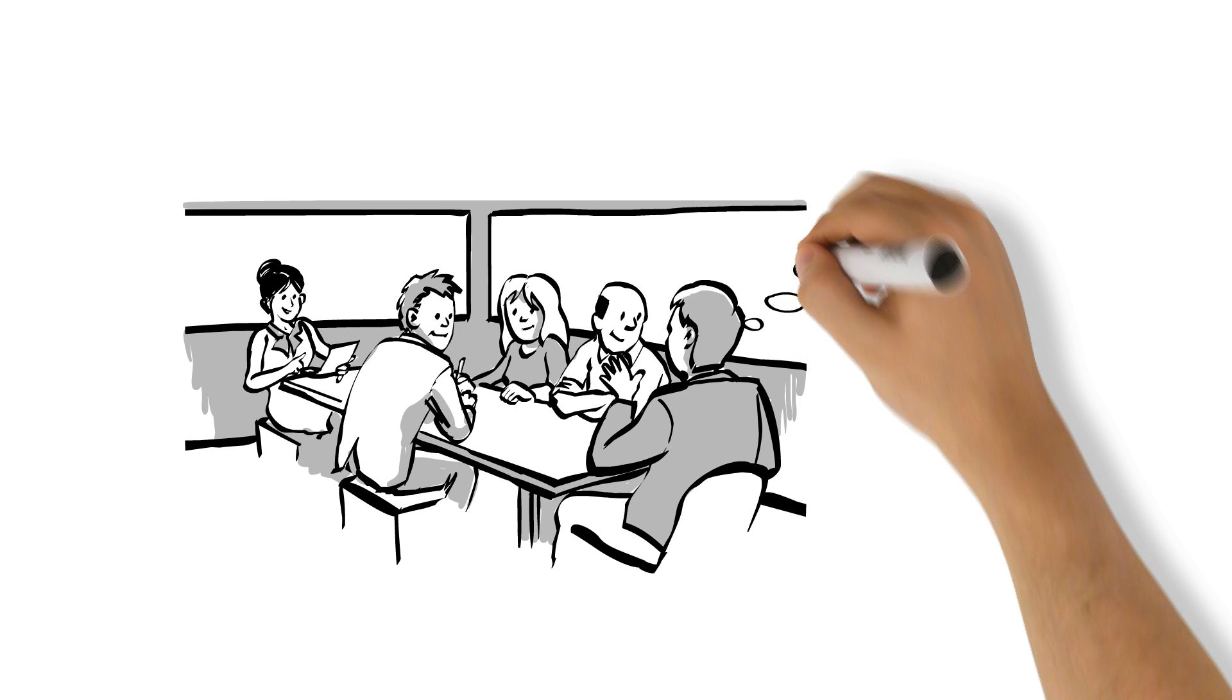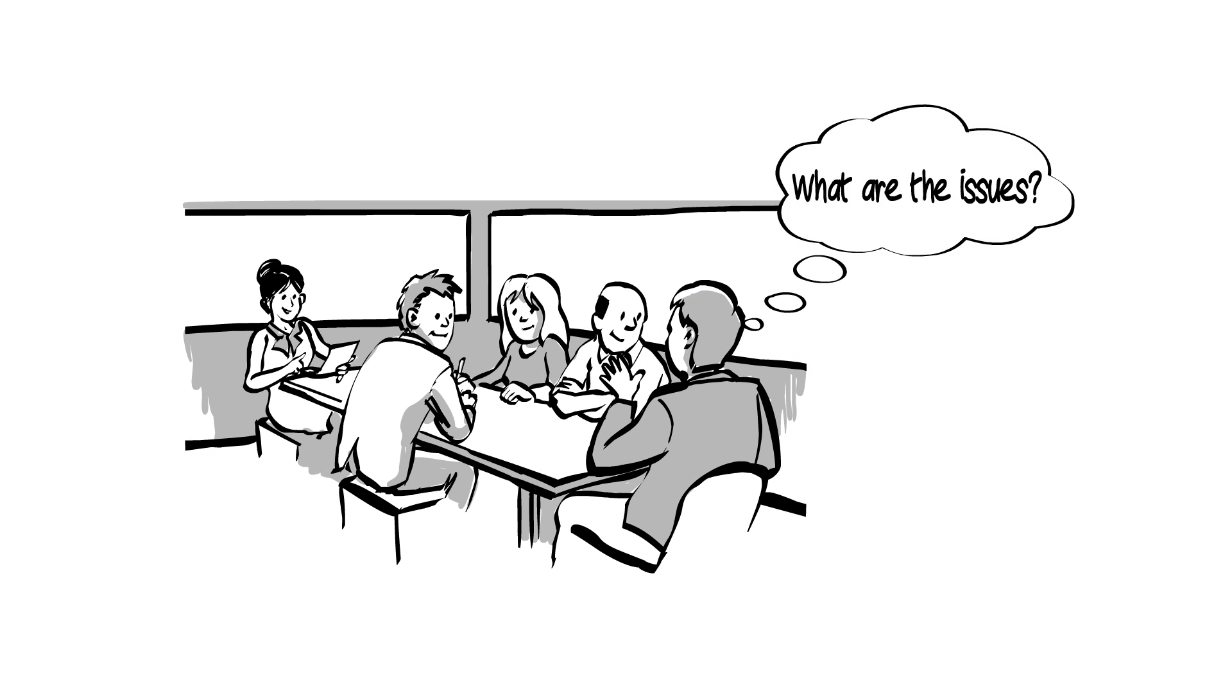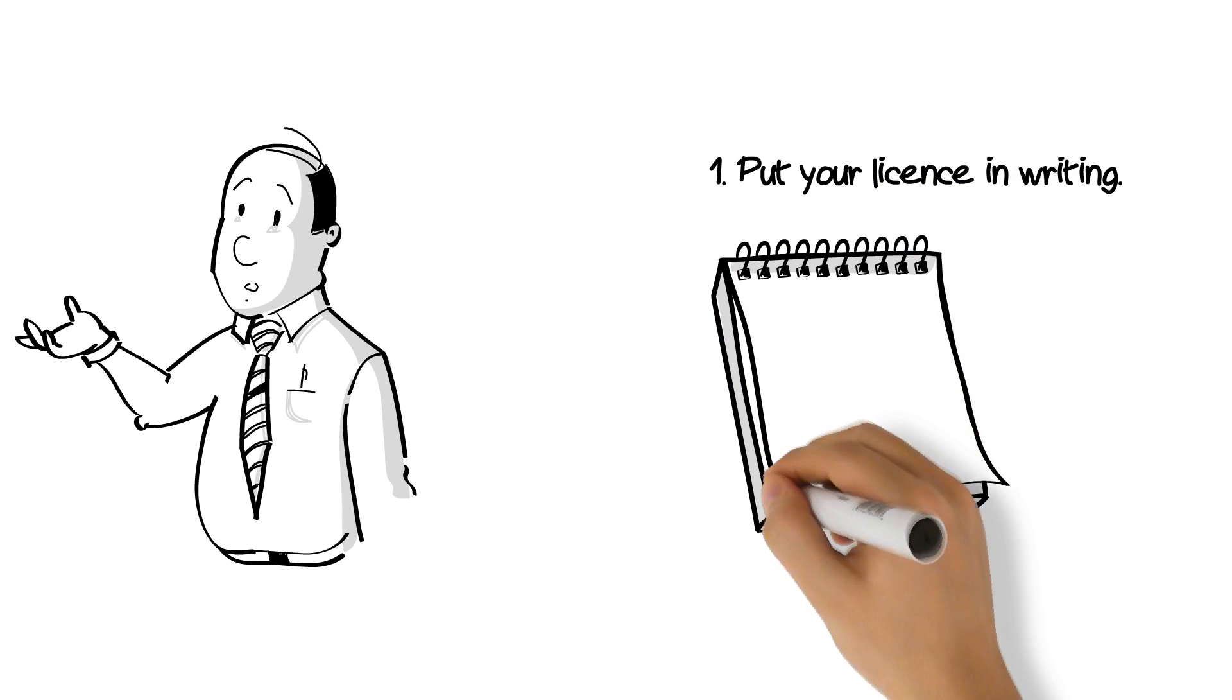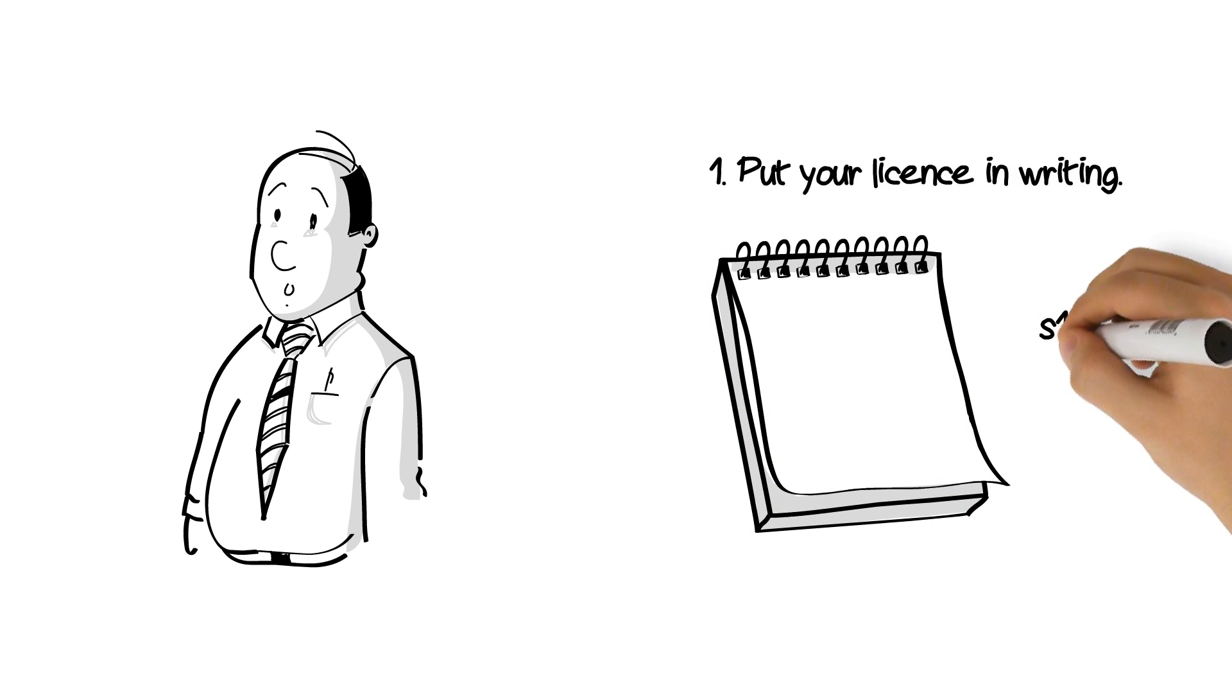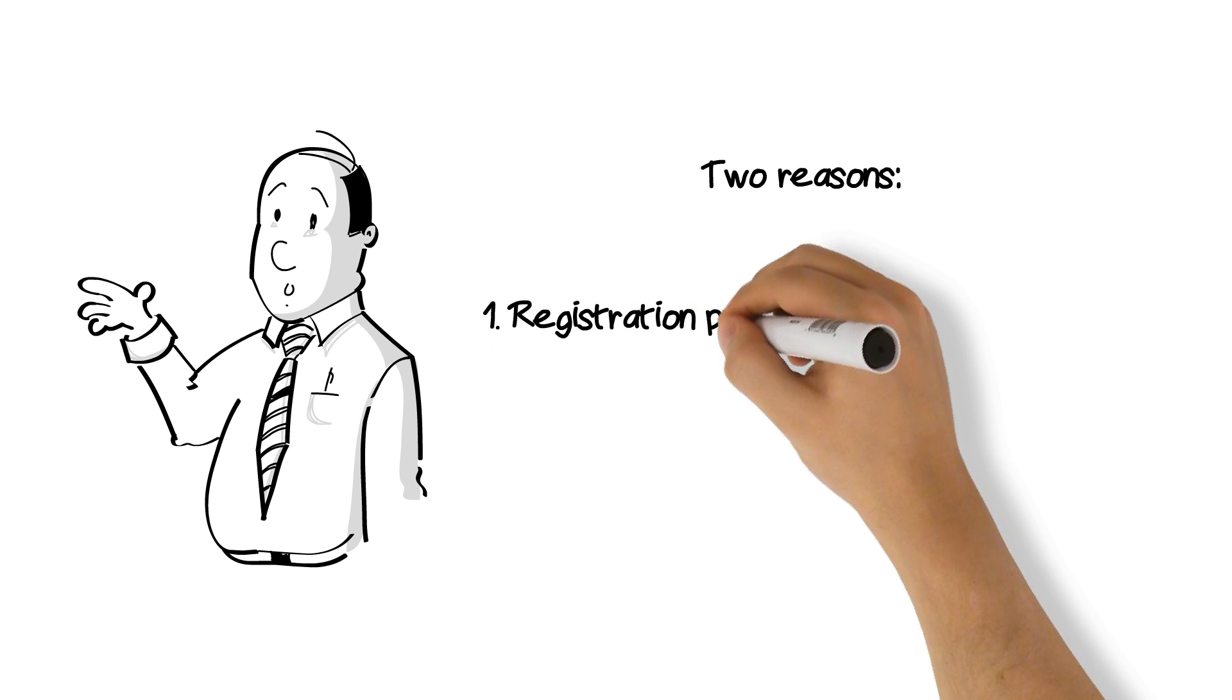So today, I'll let you know some issues to consider before granting a license. Number 1. Put your license in writing. While section 187 of the Act recommends that a license agreement should be in writing and registered, it should be done so for two reasons.